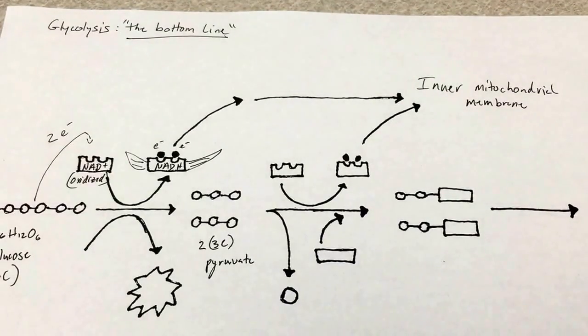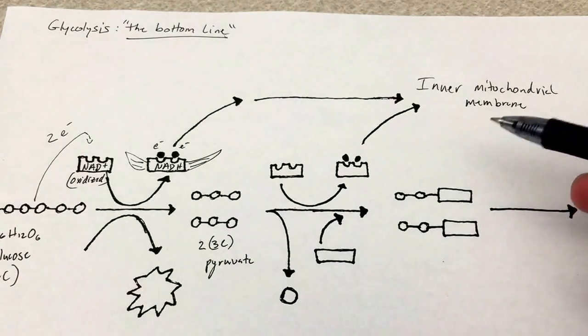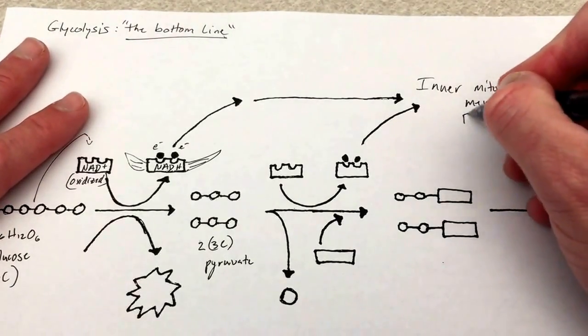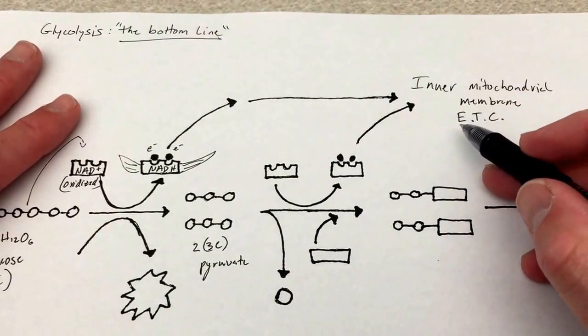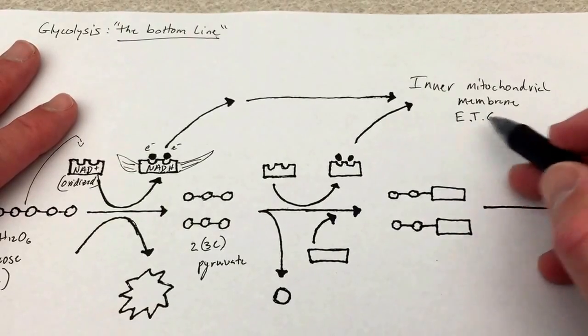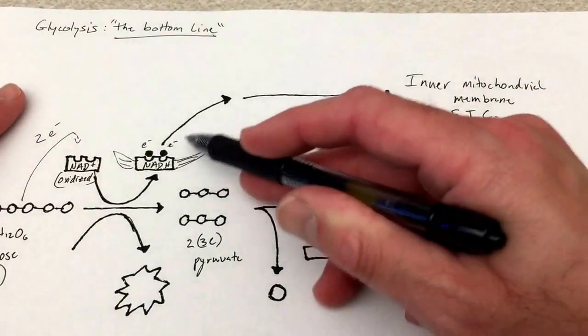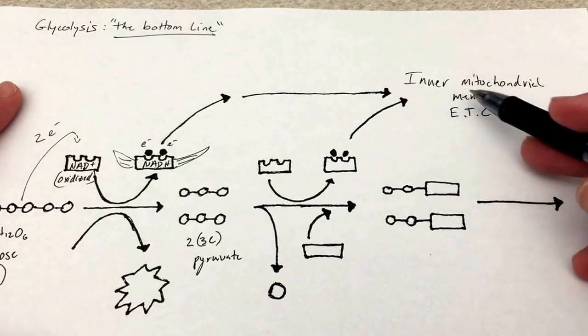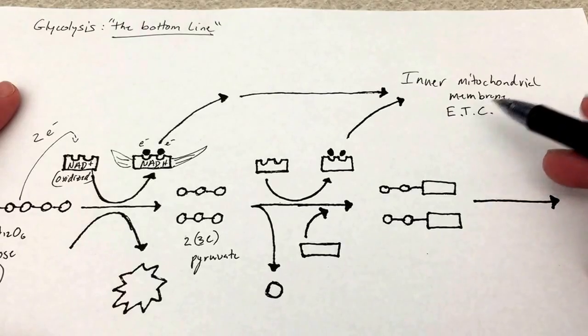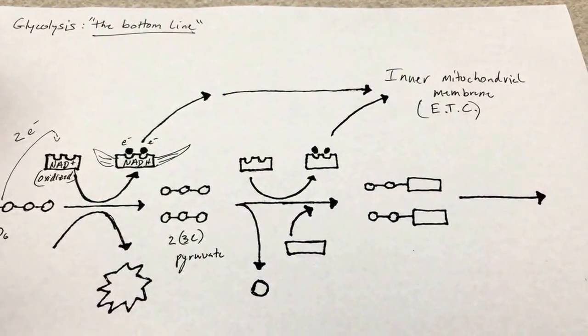Okay, so what do we remember happens in the inner mitochondrial membrane? Remember that there are proteins embedded in that membrane, proteins that are involved in the electron transport chain. So that's not etc., that stands for electron transport chain. And that is where this NADH is going to go off to. It's going to go to deliver those electrons to those proteins embedded in the inner mitochondrial membrane that participate in electron transport.